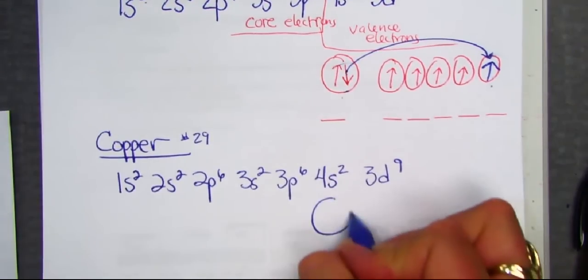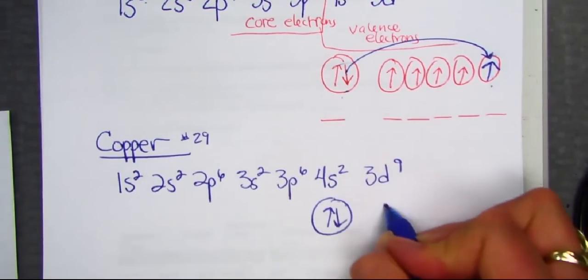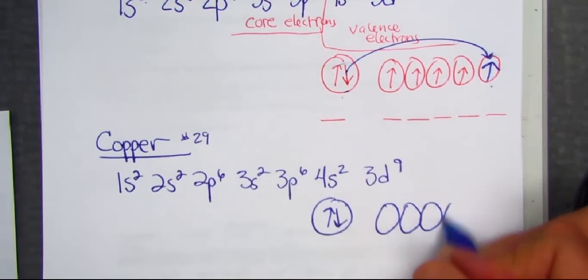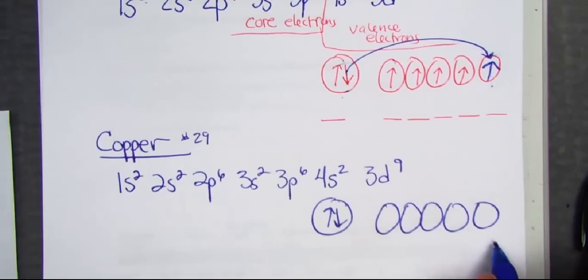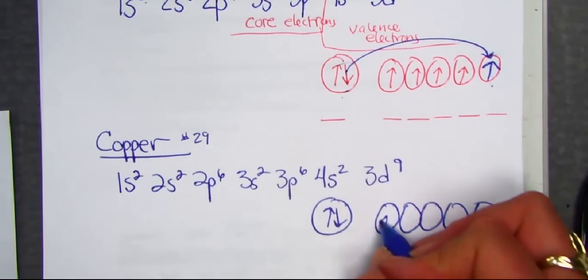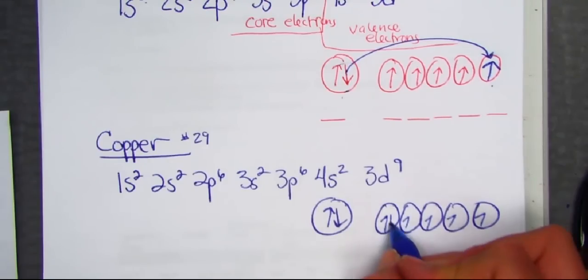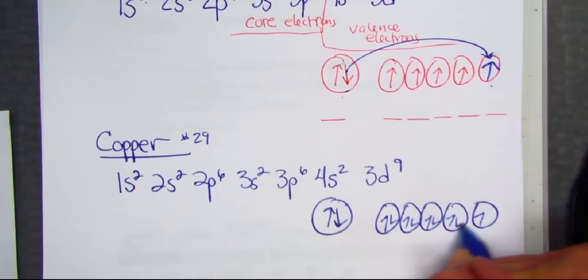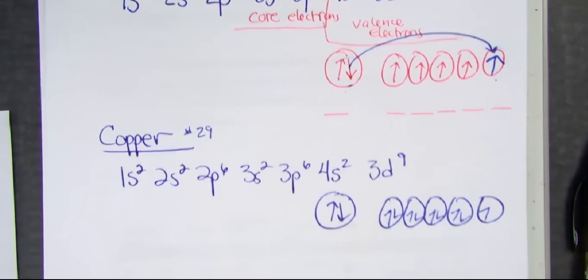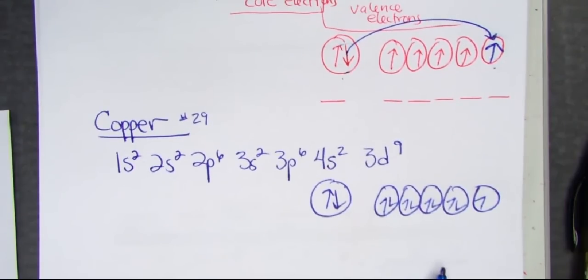Thinking about the arrangement here, here's the 2 in the 4S. The 5 equal energy levels for the D, placing one into each orbital first, going back and giving a partner. Copper, if it followed the rules, would look like this.